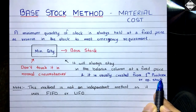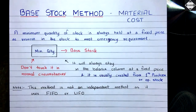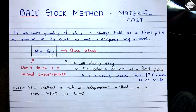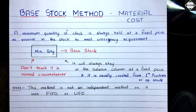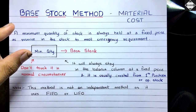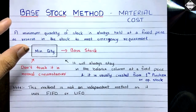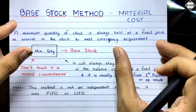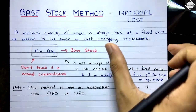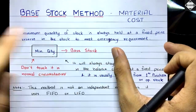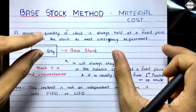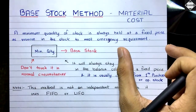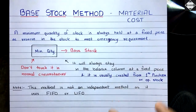The base stock is usually created from the first purchase or opening stock. In the balance column, we used to have different lots, but one lot will be fixed. For example, if you purchased 1,000 quantity on 1st January and the question says to maintain a base stock of 500 quantity, you take out 500 separately as a base stock at the purchase price — say 50 rupees — so 500 × ₹50. You keep it separate and constant till the end of the question.